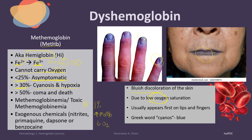Cyanosis is the bluish discoloration of the skin due to low oxygen delivery, and it usually appears first in the lips and fingers. The word cyanosis comes from the Greek word cyanos, meaning blue. Symptoms of hypoxia can include dyspnea, headache, vertigo, and sometimes a change in mental status. If methemoglobin rises to more than 50% of total hemoglobin, this can lead to coma and death. An increase in methemoglobin is called methemoglobinemia, which can be acquired or hereditary — the acquired form is called toxic methemoglobinemia, caused by exposure to nitrites, primaquine, dapsone, or benzocaine.